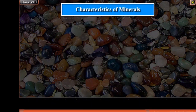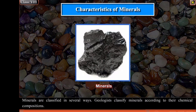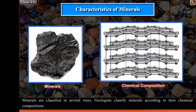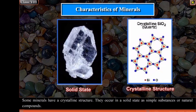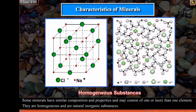Characteristics of Minerals: Minerals are classified in several ways. Geologists classify minerals according to their chemical compositions. Some minerals have a crystalline structure. They occur in a solid state as simple substances or natural compounds. Some minerals have similar composition and properties and may consist of one or more than one element. They are homogeneous and are natural inorganic substances.